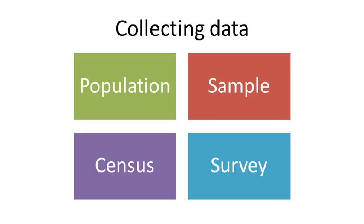There are some times when we do talk to the whole population, and that's called a census. For example, the Australian government conducts a census every five years. They ask every single person in Australia to fill out a form wherever they're staying that night, and everyone in Australia should be on one of those forms somewhere. That's a census – when you ask every person in the population. But if you only ask some people, who you assume represent everyone, that's a survey.